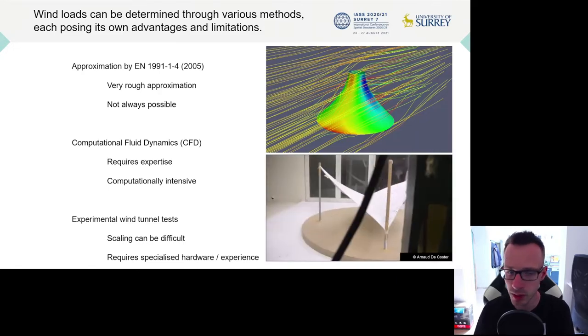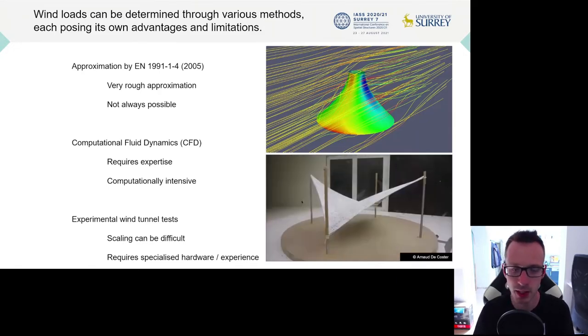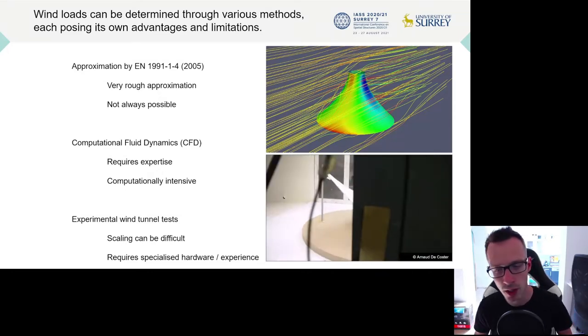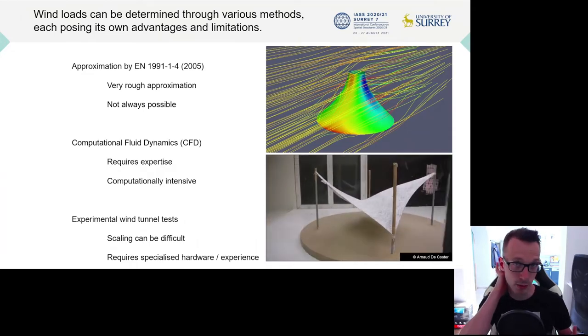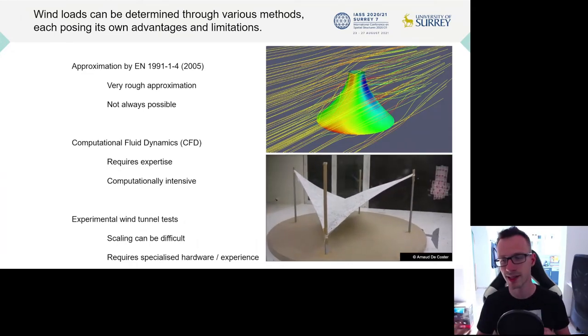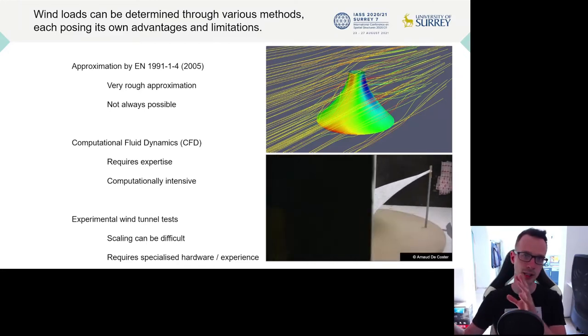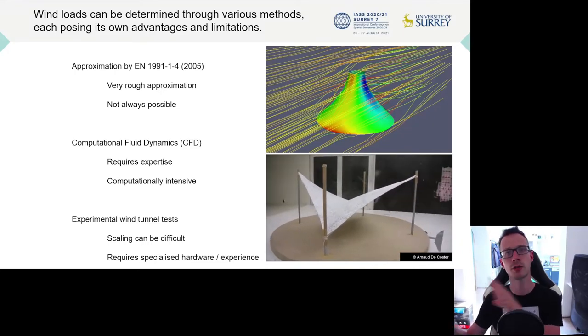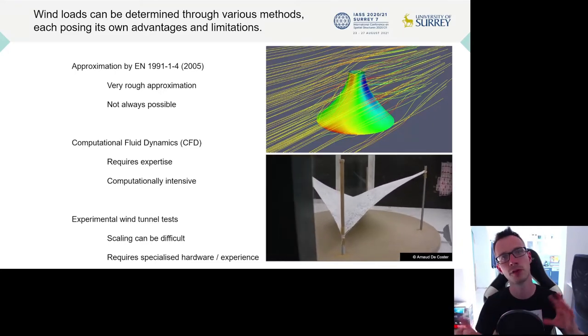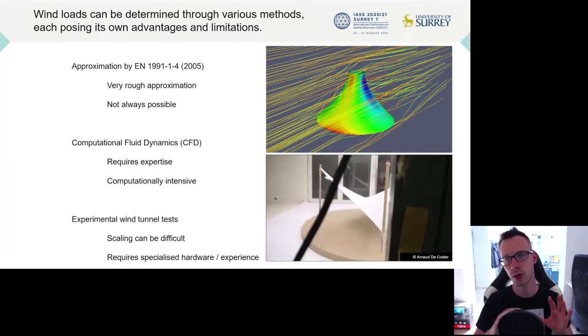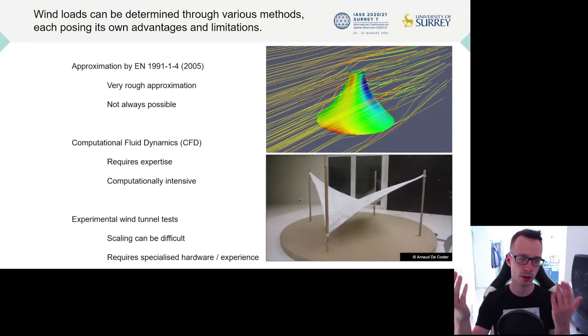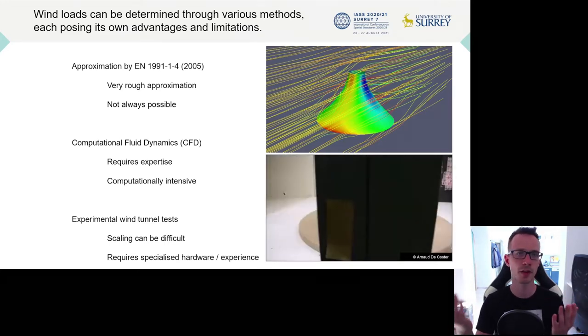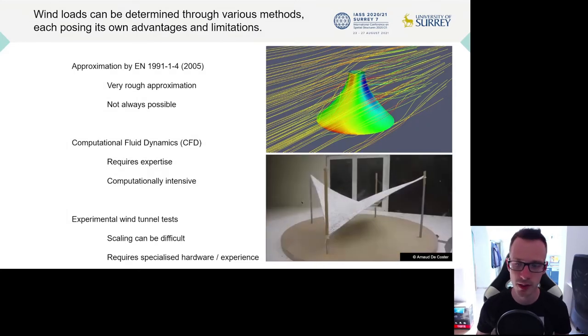A third option is to run experimental wind tunnel tests. But again, here it does require specialized hardware. Not everybody has access to a wind tunnel. But you also need expertise, not only in terms of operating the wind tunnel, but also in scaling down the reality. We are scaling a very large phenomenon, which is the atmospheric boundary layer, down to an area of just a couple of meters in section. So you have to make sure that the effects that occur at this very large scale are carried over to the small scale as much as possible. In many cases, this is not entirely possible and you're making some approximations as well.